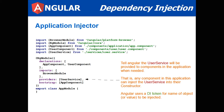Basically it tells Angular to use the user service for components in the application when needed — any component can inject the user service into their constructor. The user service appearing here is actually referred to as a token. It's the name of the object or value to be injected. By default, if the use class is not provided in the provider's declaration, Angular will look for a user service class, instantiate an object of that type, and inject it into the component's constructor.